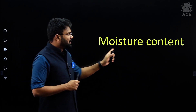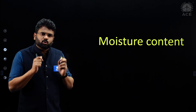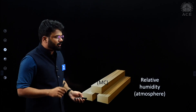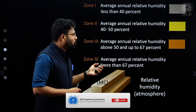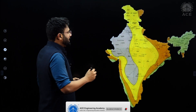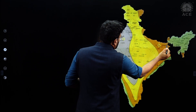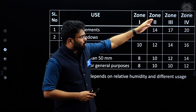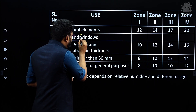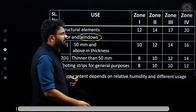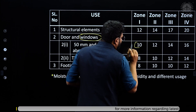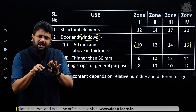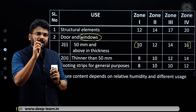If the moisture content is not right, your section will absorb moisture from the outside atmosphere and change dimension, which will induce unnecessary stresses in your structure. To choose the right moisture content, India's map is divided into 4 zones depending on relative humidity. You will decide which zone your structure falls in and choose accordingly. For example, for windows in zone 1, you take 10 percent, and in zone 4, you take 16 percent — so 10 to 16 percent will be the range, and these kinds of questions will be asked in your exam.